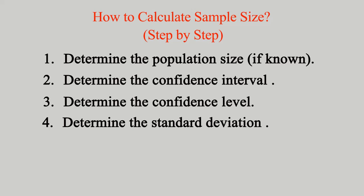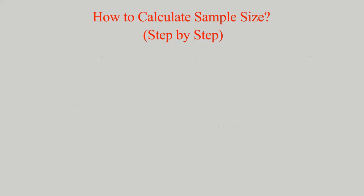Step 3: Determine the confidence level. Determine the critical value of the normal distribution at the required confidence level. For example, the critical value at 95% confidence level is 1.96.